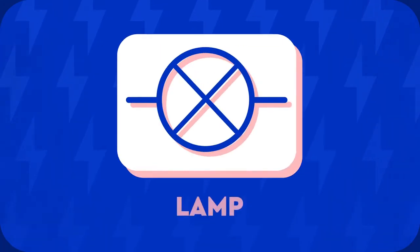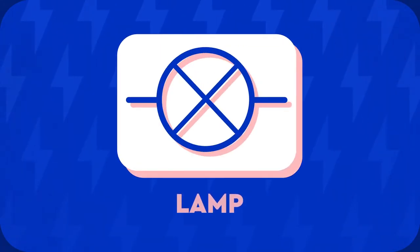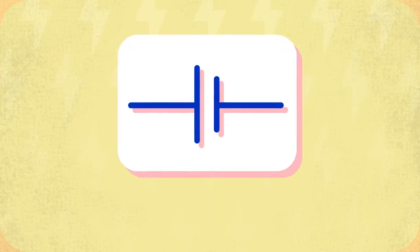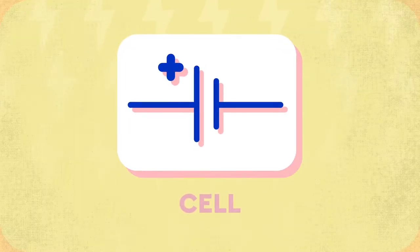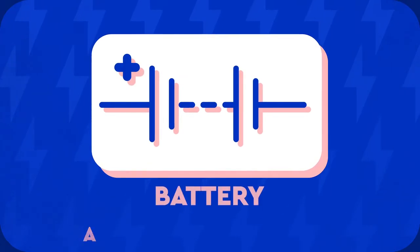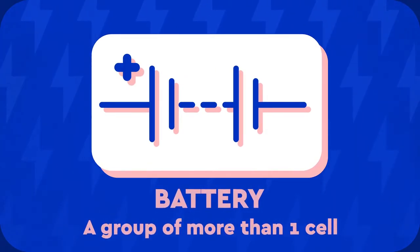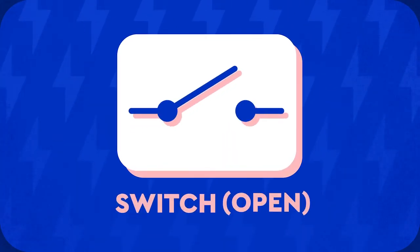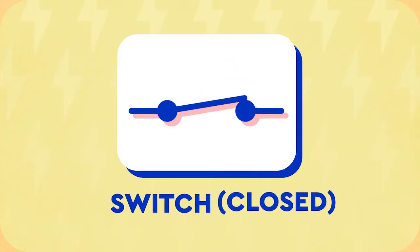This is a lamp. This is a cell. This is a battery — a group of more than one cell. A switch can be shown as open or closed.